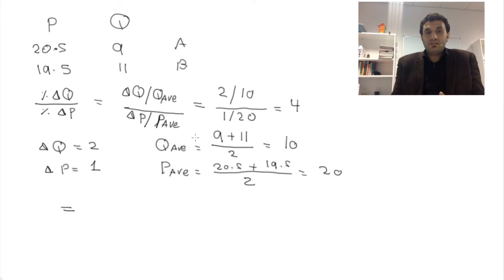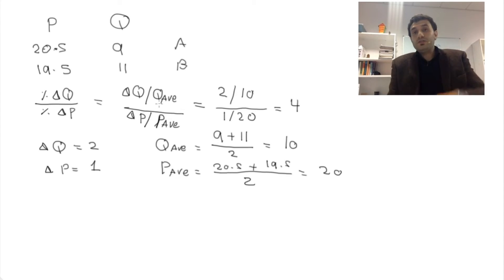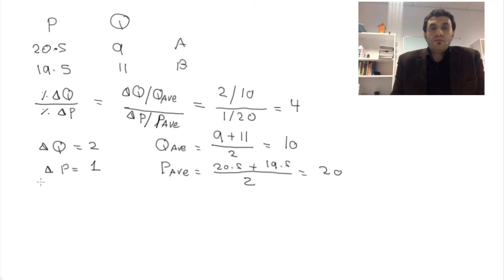I've received some questions about why we don't just use the original price. Let me show you the difference — what would happen if, rather than using the average quantity and average price, we used the original quantity and original price.